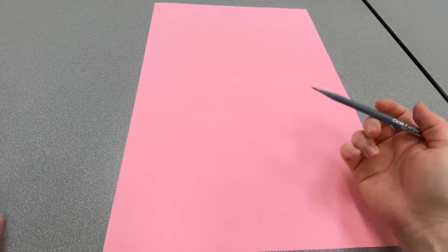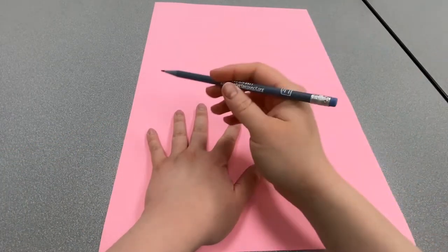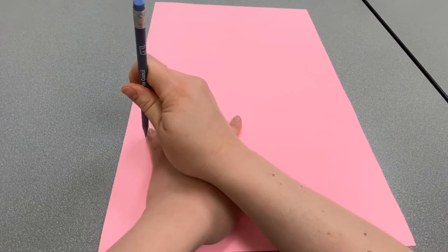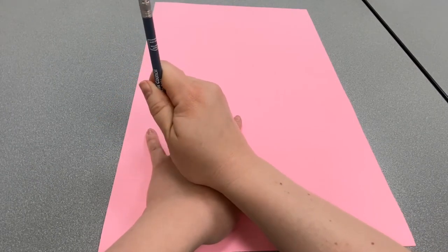First we're going to make a tracing of one of our hands. You're going to put your hand on the construction paper and trace it carefully with the pencil.